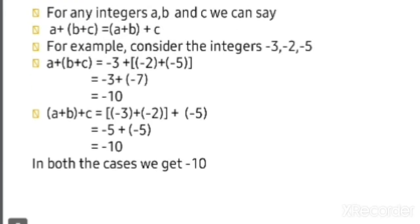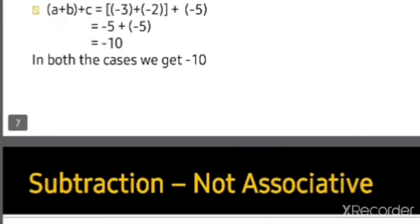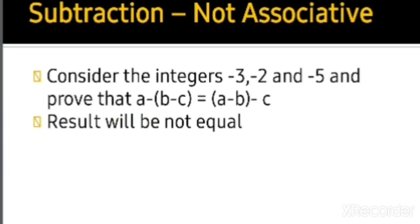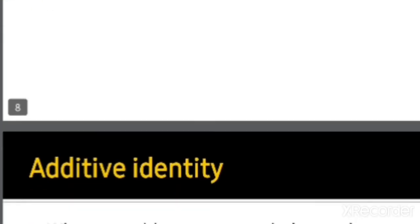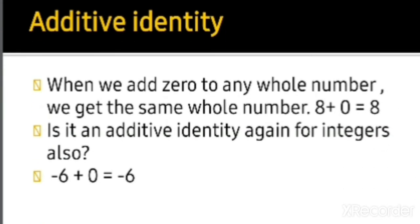Subtraction is not associative. Since we have proved that addition is associative, you need to prove that a minus (b minus c) is not equal to (a minus b) minus c. This is an easy one — prove it and send it to me.